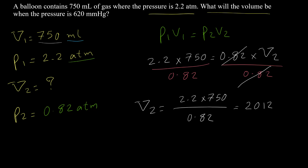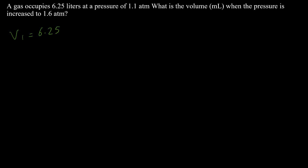Example 4: A gas occupies 6.25 liters at a pressure of 1.1 atm. What is the volume in milliliters when the pressure is increased to 1.6 atm? So v1 = 6.25 liters, p1 = 1.1 atm, p2 = 1.6 atm, and we want v2 in milliliters.